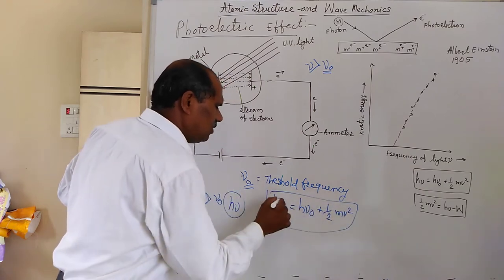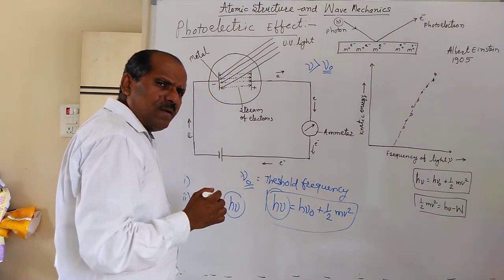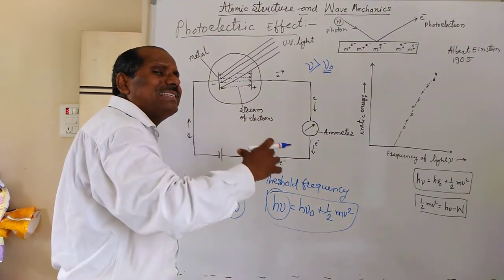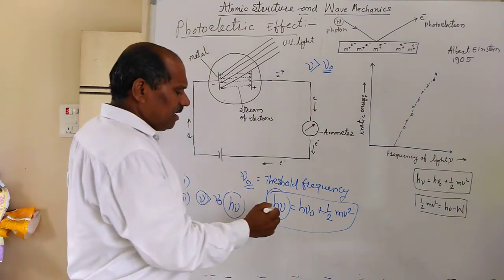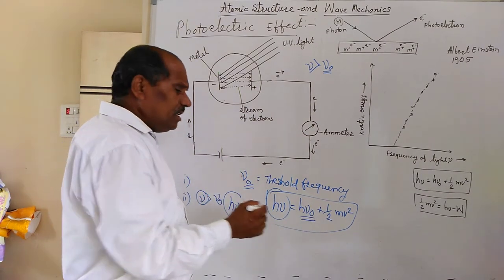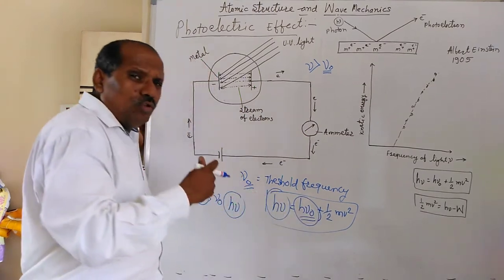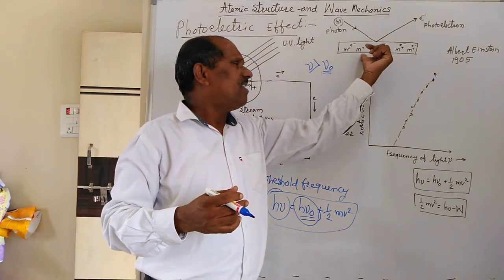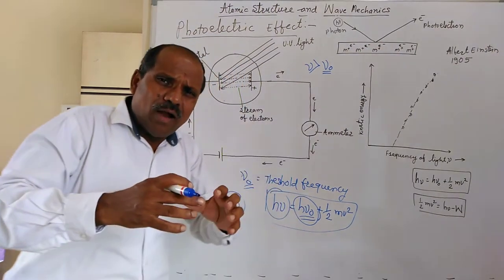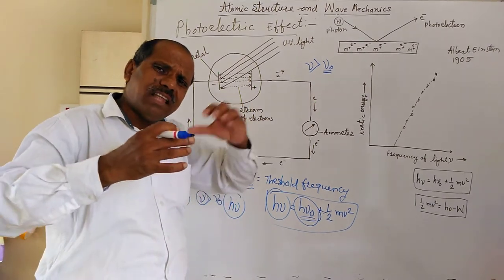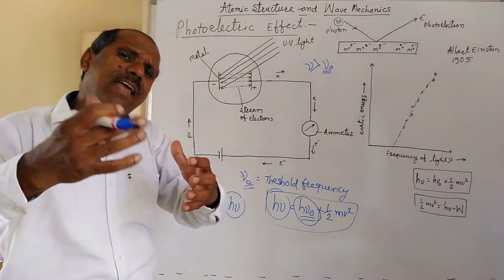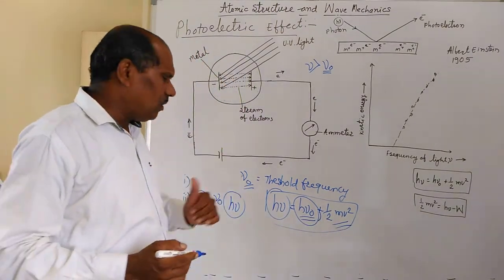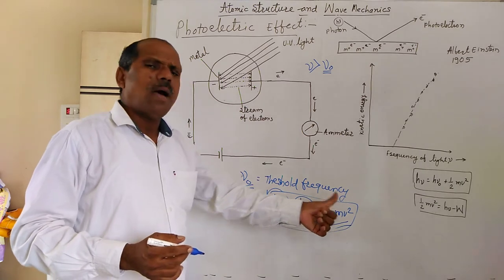H-nu is the energy of the incident photon — the energized one with surplus energy. Part of that energy is utilized to remove the electron by overcoming the attractive forces between the metallic ion and the electron. Whatever extra energy is present in the photon goes into the ejected photoelectron in the form of kinetic energy. Hence we write: H-nu equals H-nu-zero plus one-half m-v-squared.